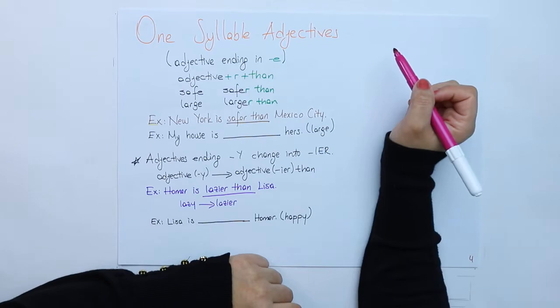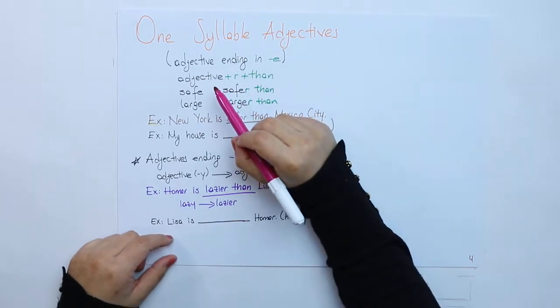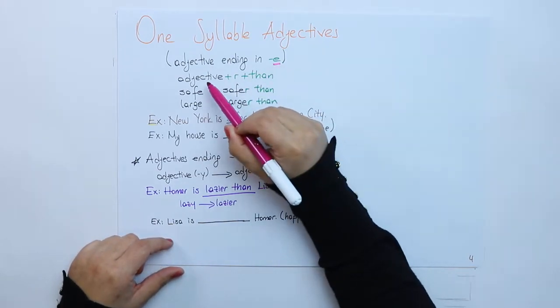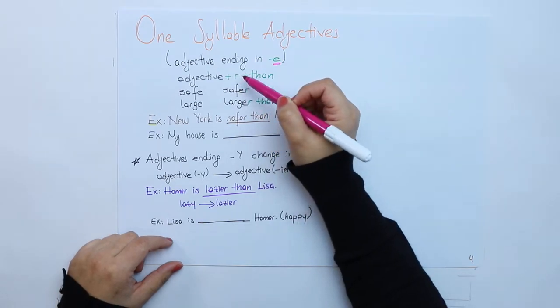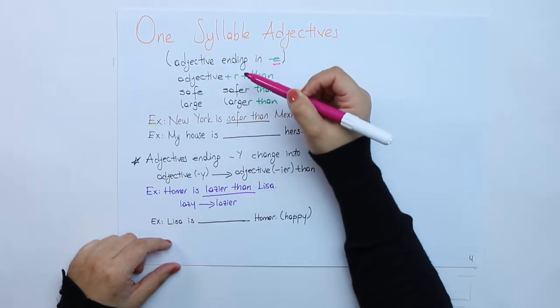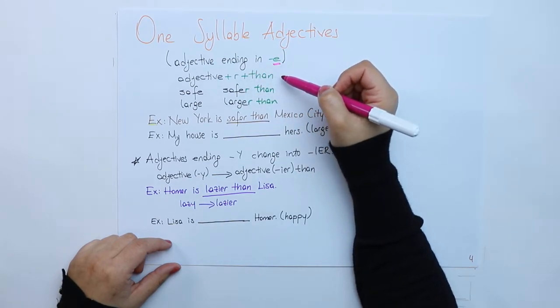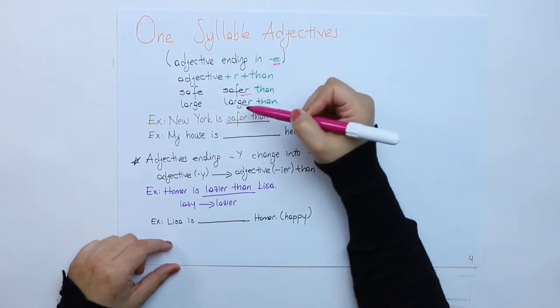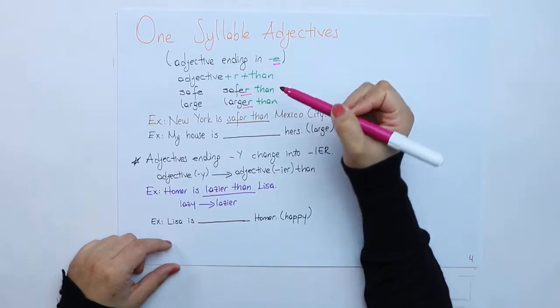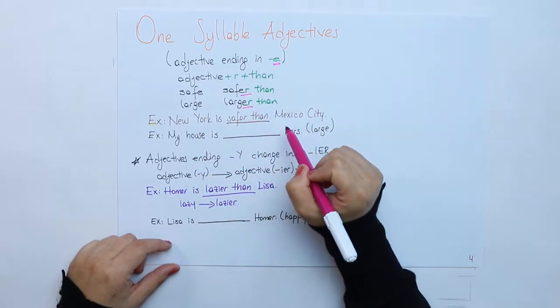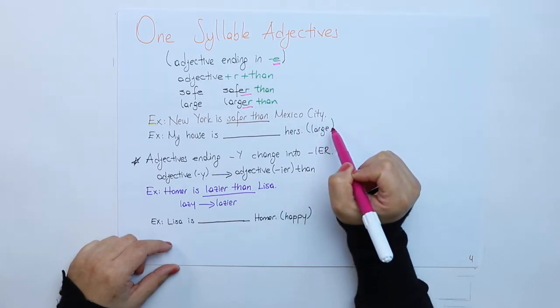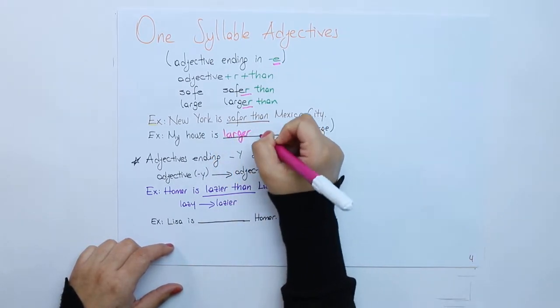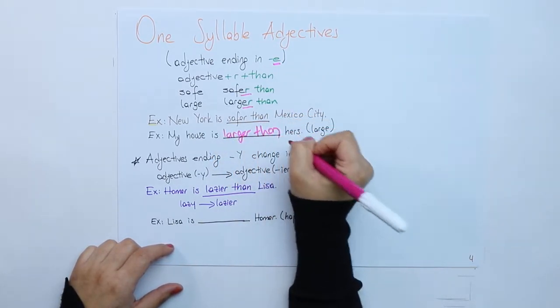Another point for one-syllable adjectives. New York is safer than Mexico City. My house is larger than hers.